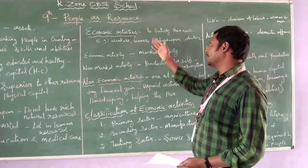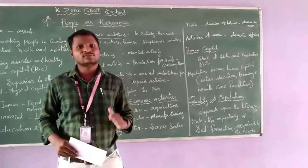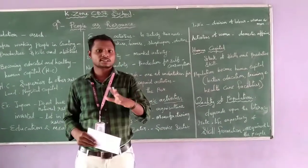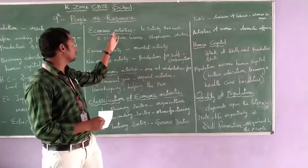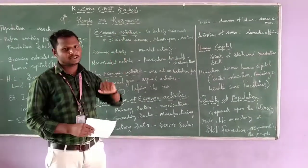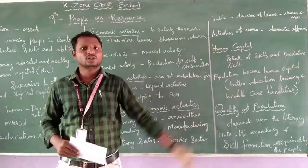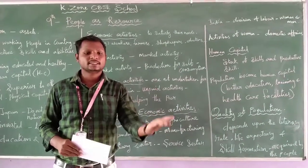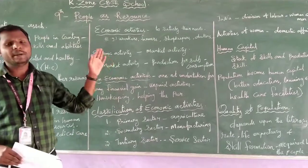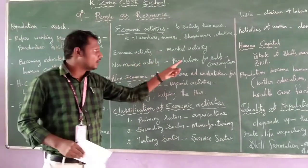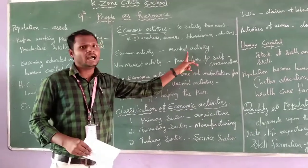Now we come to the next topic: economic activities. What are economic activities? To satisfy our needs and wants through work — that is called an economic activity. Examples include workers, farmers, shopkeepers, doctors — any job that satisfies their need is an economic activity. These are also called market activities, where people are selling or gaining financial gain.